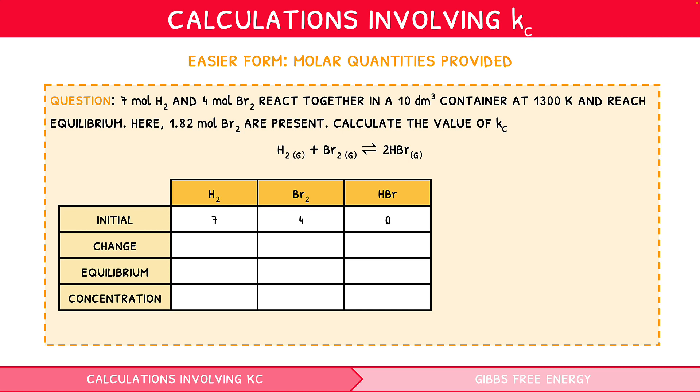Now, fill in the equilibrium molar quantity provided, 1.82, and subtract this from its initial quantity to find the change in the number of moles, i.e. 2.18. Now, determine the change that would be experienced for each of the remaining species. To do this, multiply this change by their coefficients in the stoichiometric equation, just like you would during a moles question. So, H2 would experience the same change, whilst HBr would experience a change twice as great, i.e. 4.36.